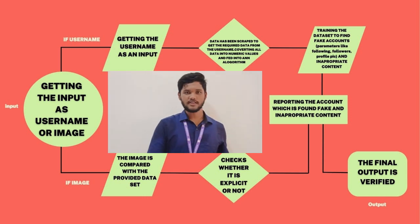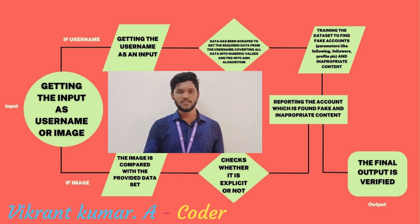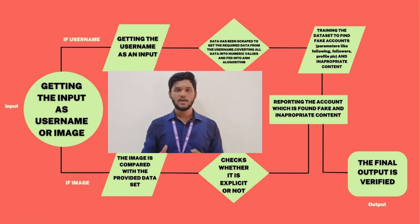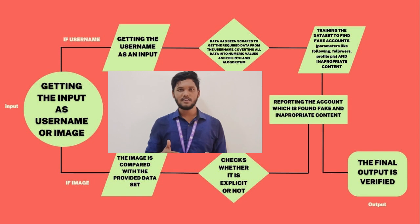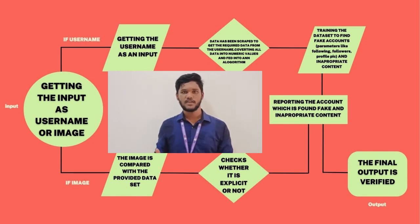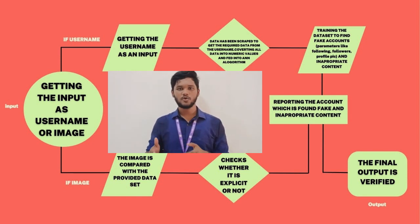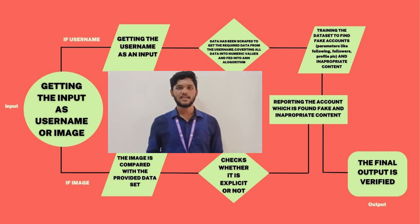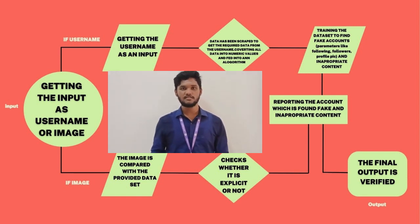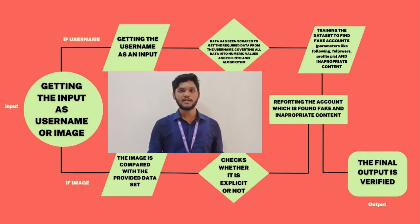Now I am going to explain the flowchart. Here we can get a username or image as an input. If the input received is a username, using web scraping we can receive all the required data. The received data is then converted into numerical values and fed to the ANN algorithm. The collected dataset is trained to identify if the profile is genuine or not. Similarly, if the input received is an image, it is compared with multiple accounts for impersonation and explicit content.